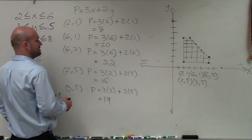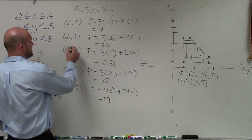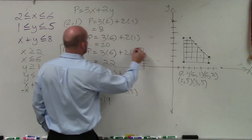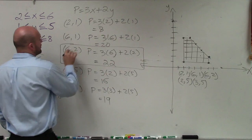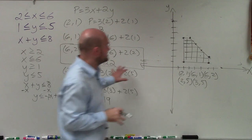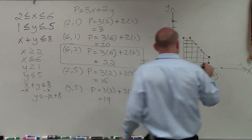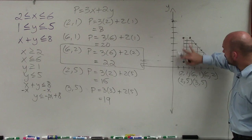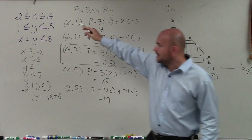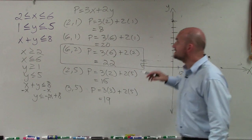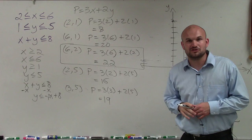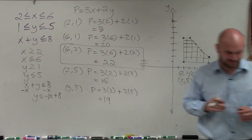Therefore, my maximum point is (6, 2) because that is the point that satisfies all of the constraints and maximizes the objective function. Thanks.